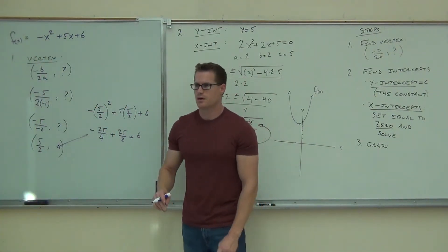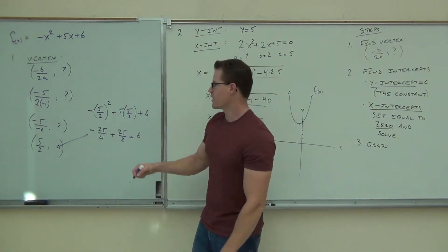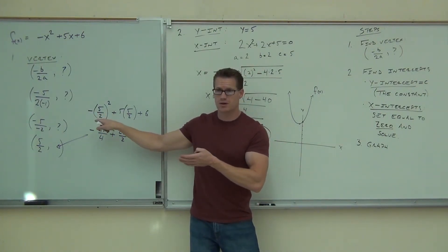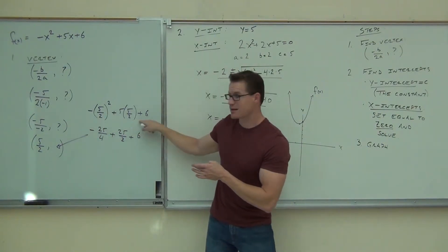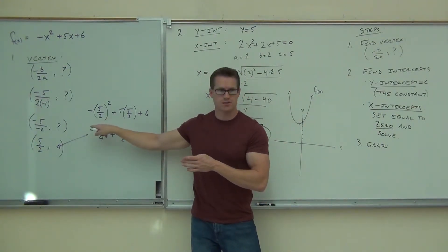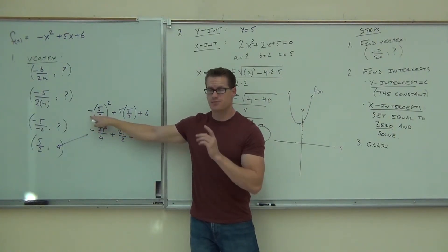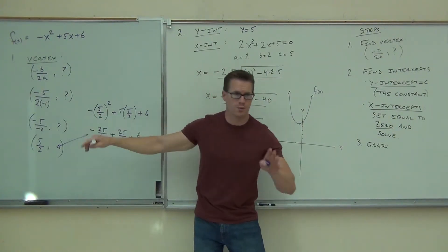So we get negative 25 fourths plus 25 halves plus six. You still okay so far? I'm going quickly through the fractions here, but are you okay on where this comes from? This is the important part. You can plug this in a calculator and it will do it for you. But are you okay I'm getting exactly this thing? Not sure if you are. Are you okay that that negative is outside the parentheses? That's very important for you.